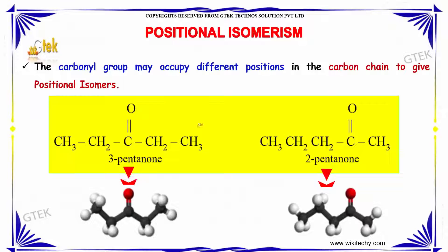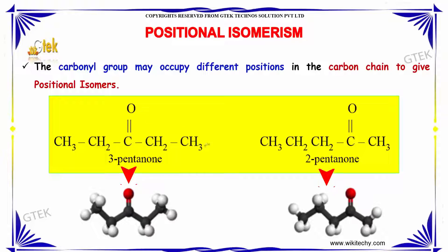The carbonyl group may occupy different positions in the carbon chain to give positional isomerism. For example, this carbon atom is in the third position whereas here it is in the second position, so the changes in position refer to positional isomerism.